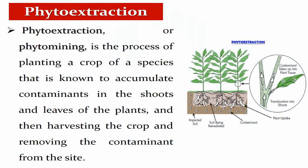Another mechanism is phytoextraction, sometimes called phytomining. This process accumulates contaminants inside the plants — within the shoots or leaves. After this accumulation, we can harvest the crop or plants and remove the contaminant from the site. Once the plant has accumulated the contaminants, we harvest it and the contaminant is removed as well.